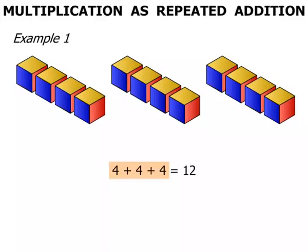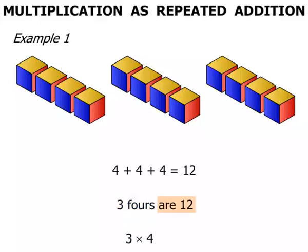Now how many 4's have we got? We've got 3. So we can say that 3 4's are 12. Now 3 4's can be written using the multiplication sign: 3 times 4, and it equals 12.